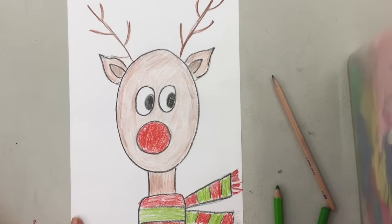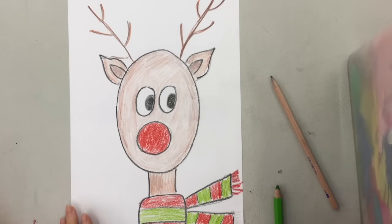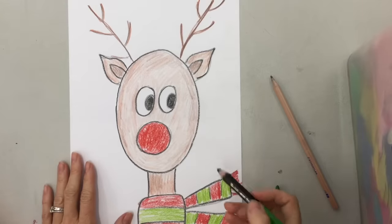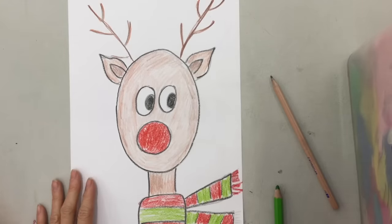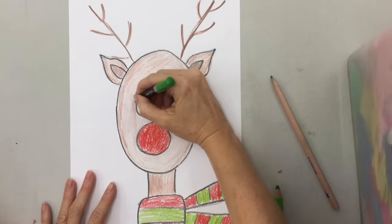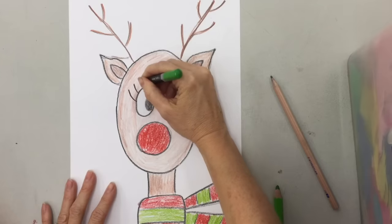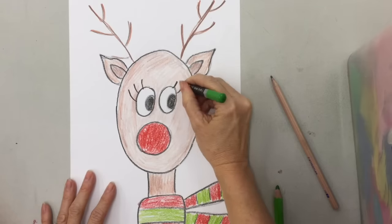And there's my cute little colored in reindeer. One thing I forgot to say earlier too, if you want a boy reindeer, you can leave the eyes like that. If you want a girl reindeer, you can put some little eyelashes on her like this. I was going to make a girl and I forgot. There we go, so there's my little girl reindeer.